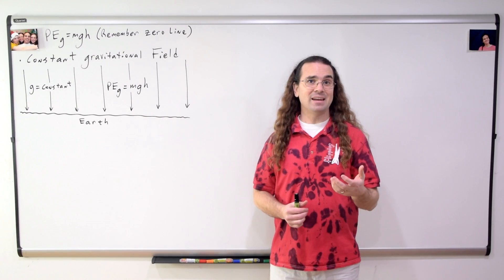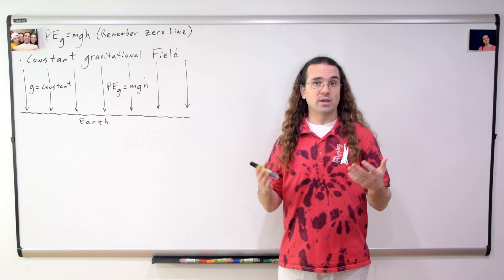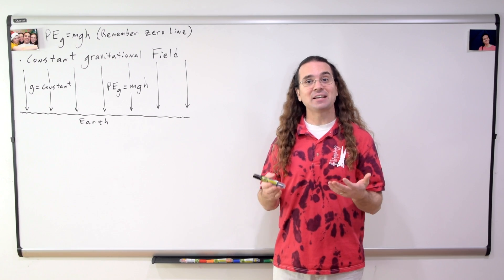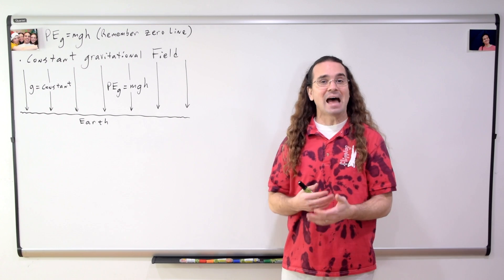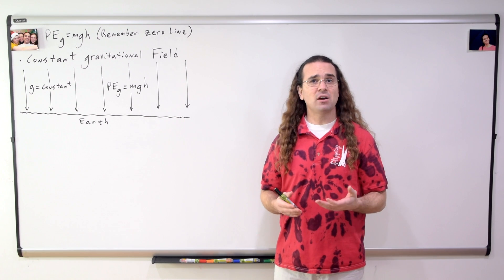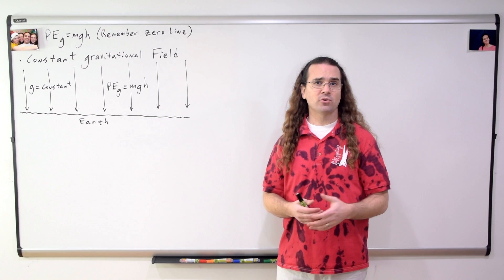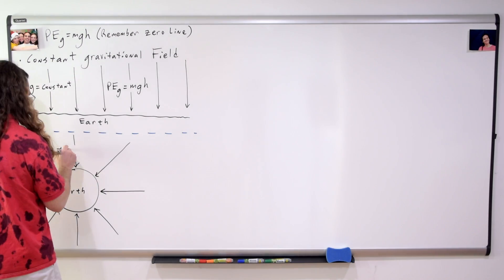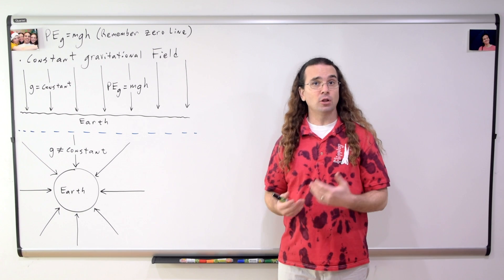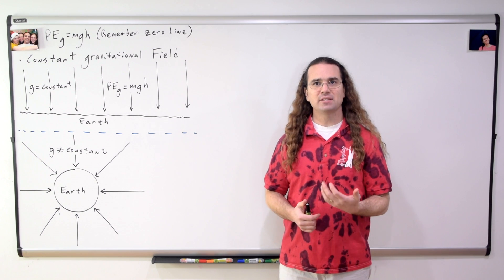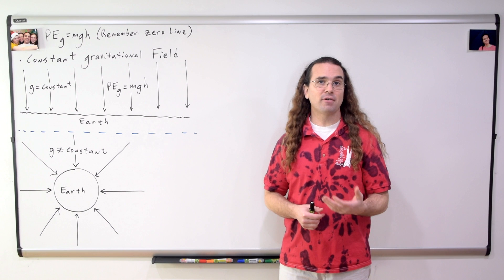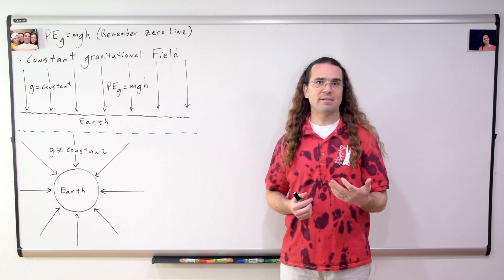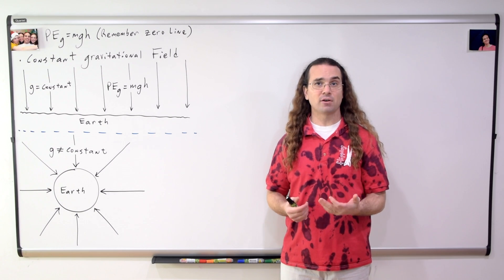When you look at the surface of a planet on a local level, like where we all are right now, the acceleration due to gravity has a constant magnitude of 9.81 meters per second squared down on planet Earth. We live our lives in a constant downward gravitational field. When we look at the Earth from a non-local or global perspective, you can see the gravitational field is not constant. As we get farther from the Earth, the magnitude of the gravitational field decreases and the gravitational field lines in the drawing get farther apart.